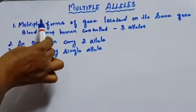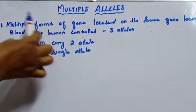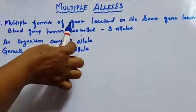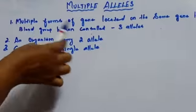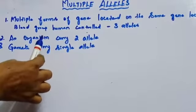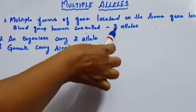Multiple Alleles means that it occurs in multiple forms of gene. They are located on the same gene locus. You can take an example as blood group in human. Blood group in human is controlled by three alleles.